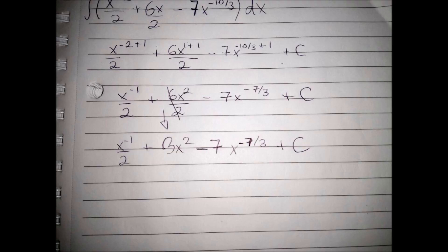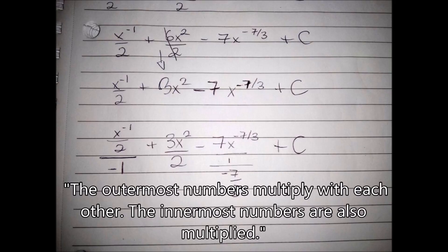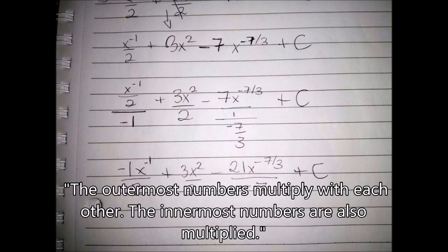Now we divide each fraction by the exponent. I used a method here, where the outermost numbers in a fraction multiply with each other. The innermost numbers in a fraction multiply as well. The product of the outer numbers is the numerator. The product of the inner numbers is the denominator.